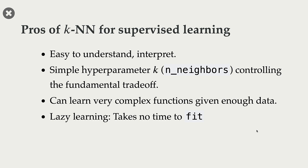So far we have two machine learning algorithms in our toolbox: decision trees and k-nearest neighbors. Both these algorithms are easy to understand and interpret. In case of KNNs, we have this simple hyperparameter k, or n_neighbors, which controls the fundamental trade-off. And given the simplicity of this model, we can learn quite complex functions if we are given enough data.